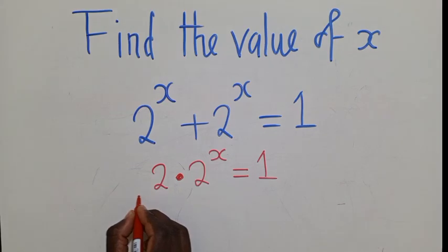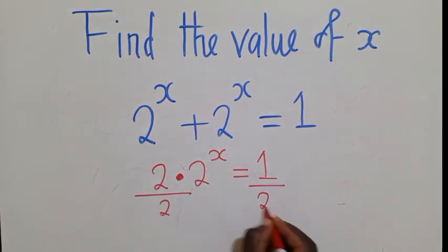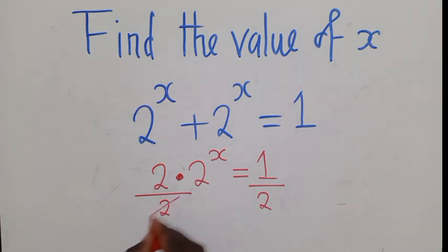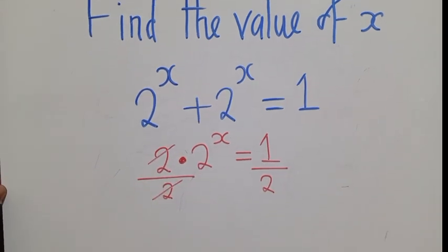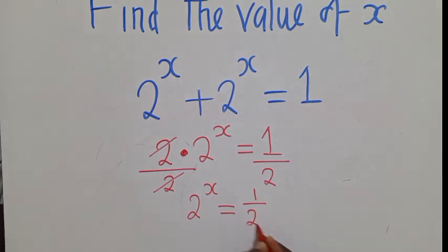So once we do that, we now divide by 2 both sides. So this and this will cancel, or will go, we shall remain with what? We shall remain with 2 power x is equal to 1 over 2.